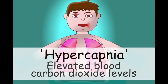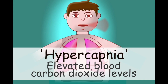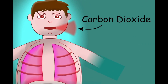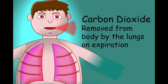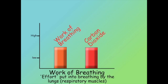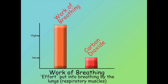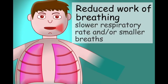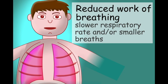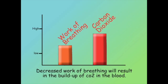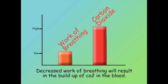Hypercapnia occurs when the lungs are unable to remove enough carbon dioxide from the body to keep blood CO2 levels within a normal range. CO2 is removed from the body on expiration. There is a direct relationship between the work the body puts into breathing and blood CO2 levels. If the respiratory effort is insufficient to keep up with the amount of CO2 being produced by cellular metabolism, then carbon dioxide levels in the blood will begin to rise.